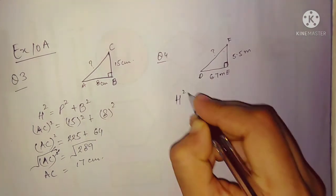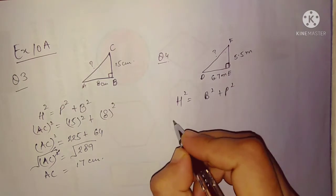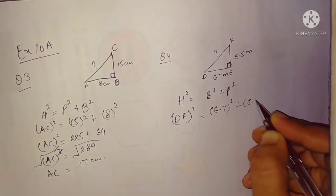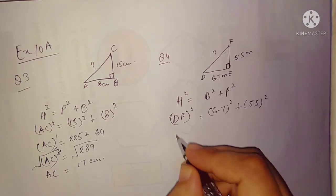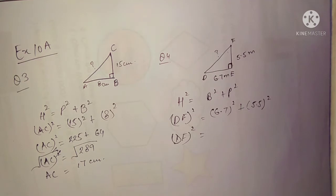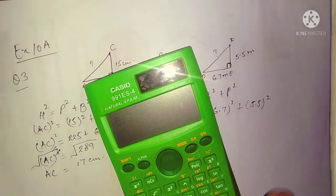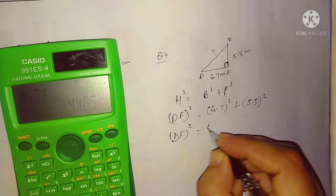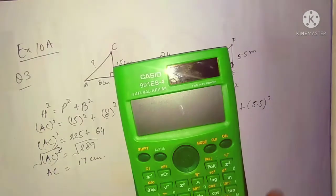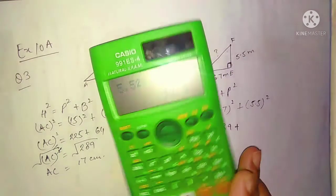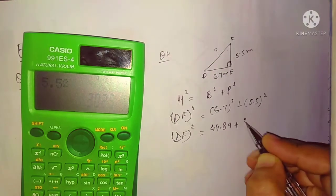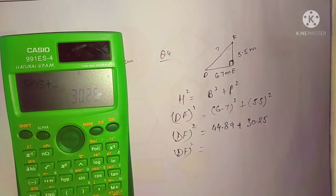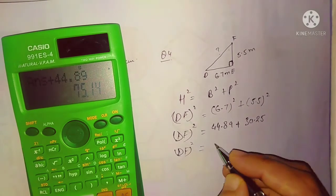Hypotenuse squared is equal to base squared plus perpendicular squared. Hypotenuse is DF, base is 6.7, and perpendicular is 5.5. DF squared equals 6.7 squared plus 5.5 squared. 6.7 squared equals 44.89 and 5.5 squared equals 30.25. Adding both: 44.89 plus 30.25 equals 75.14.